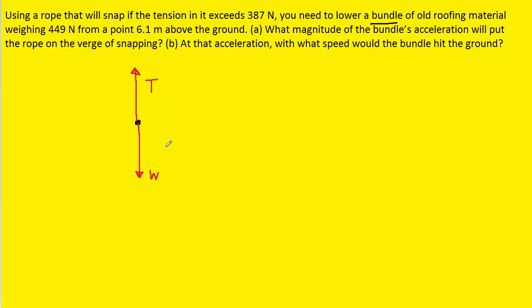These are the only two forces acting on the bundle. Notice that one of the forces points up and so it would have a positive value. The other force is pointing down in the negative direction so it'll actually be negative W for its value.